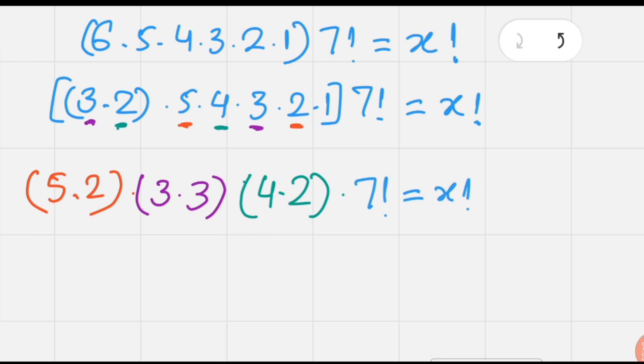Since 5 times 2 is 10 and 3 times 3 is 9, 4 times 2 is 8 times 7 factorial equals x factorial.